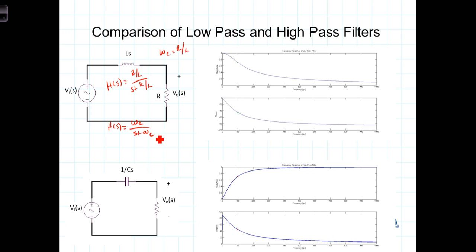In the high-pass filter we found that H(S) was equal to S over S plus 1 over RC, and again in this situation we found that the cutoff frequency was equal to 1 over R times C. Thus we could also write the transfer function as H(S) equals S over S plus omega C.